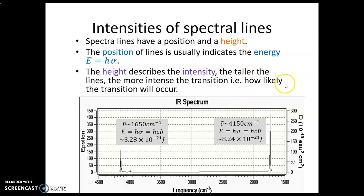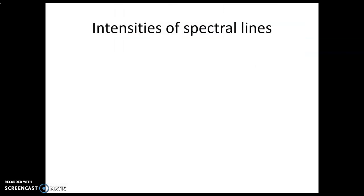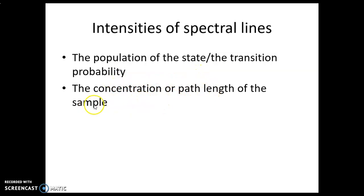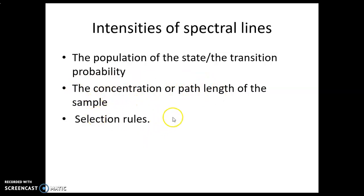The intensity tells us how likely the transition will occur. We will talk about three reasons. The first is the population of the state — that is, the state from which the transition is taking place. The second is experimental in nature: concentration or path length, where path length refers to the size of the cuvette used and concentration refers to how much sample is present. The third, which is mathematical or quantum mechanical in nature, is the selection rule.